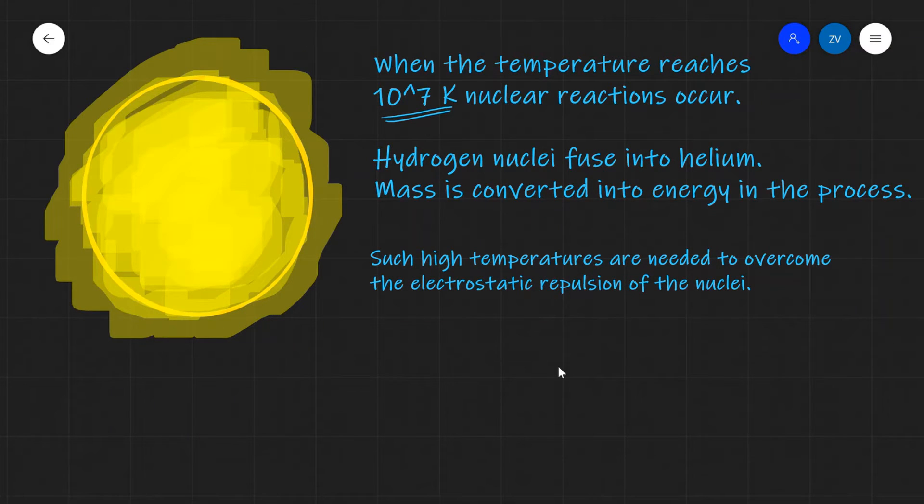During that process, hydrogen nuclei fuse into helium and mass is converted into energy. This has been in accordance with Einstein's famous equation that delta E is equal to delta m c squared, but more on this when we actually do nuclear physics.